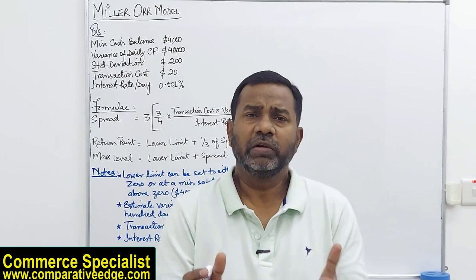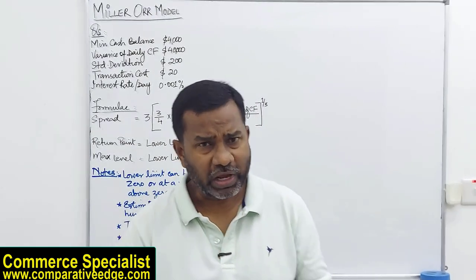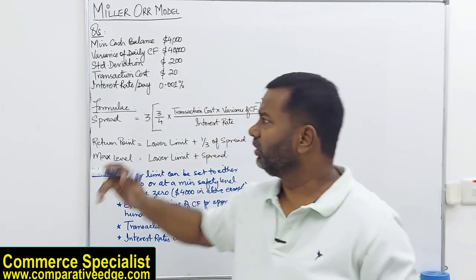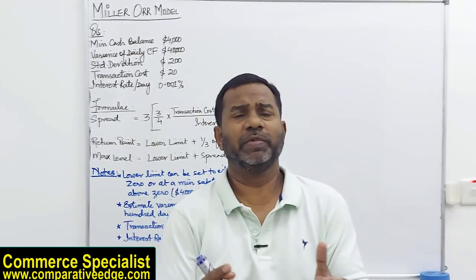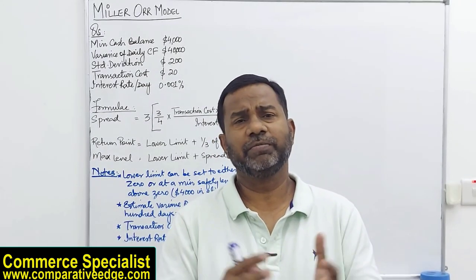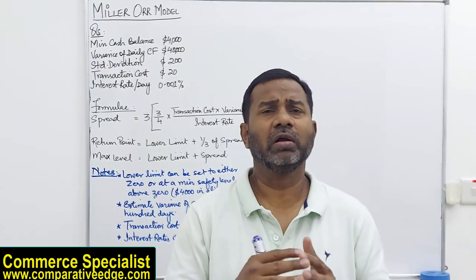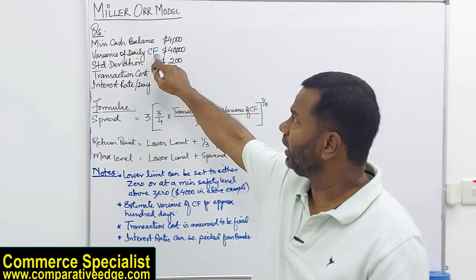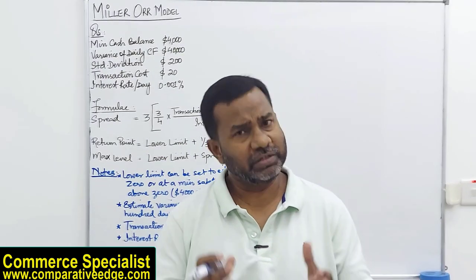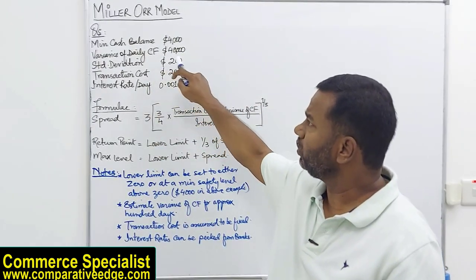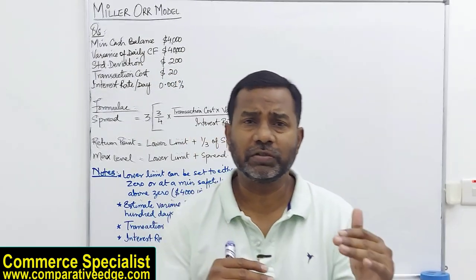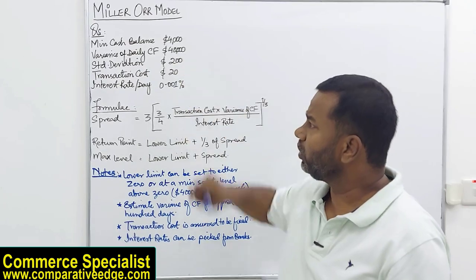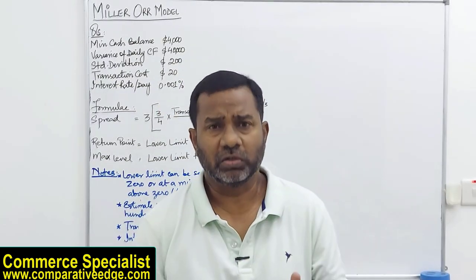By limits I mean: what should be the maximum balance at any given point, what is the minimum balance, and what is the average balance to maintain so that cash is never too high or too low. The Miller-Orr model deals specifically with managing cash levels in a business. The given details are: minimum cash balance 4,000; variance of daily cash flow 40,000; standard deviation 200; transaction cost 20; and interest rate 0.001.